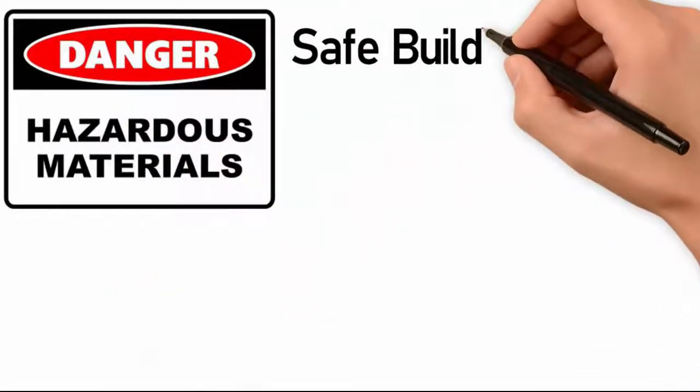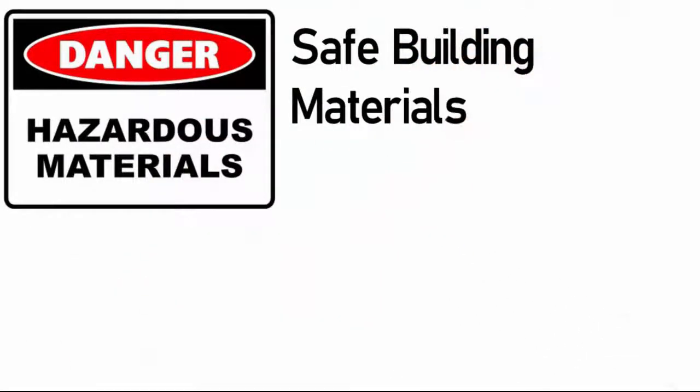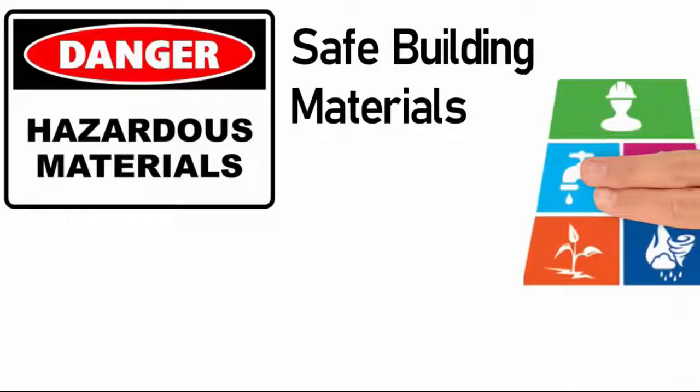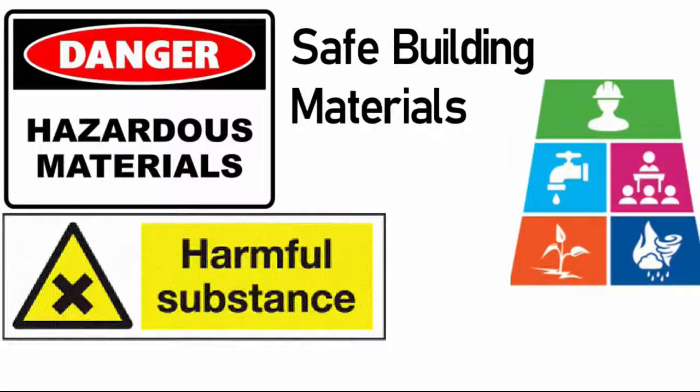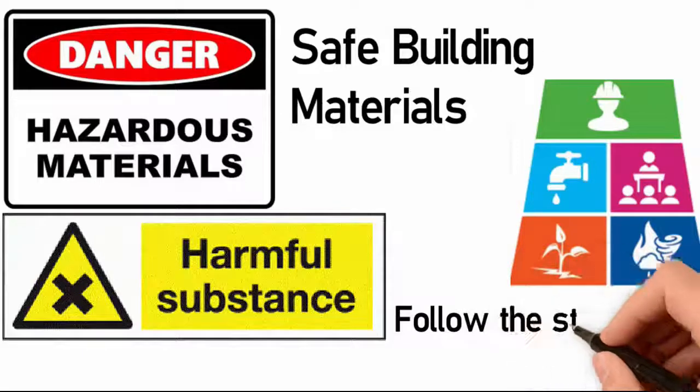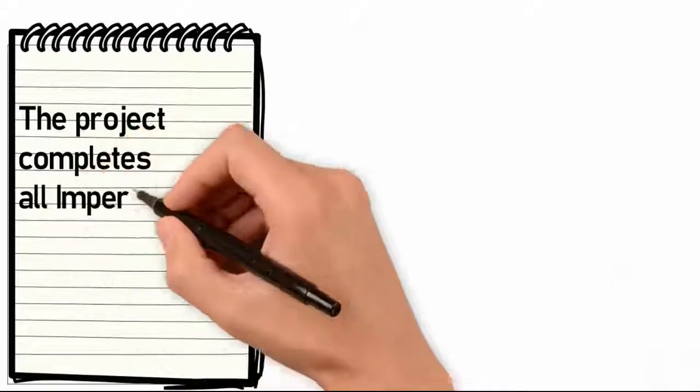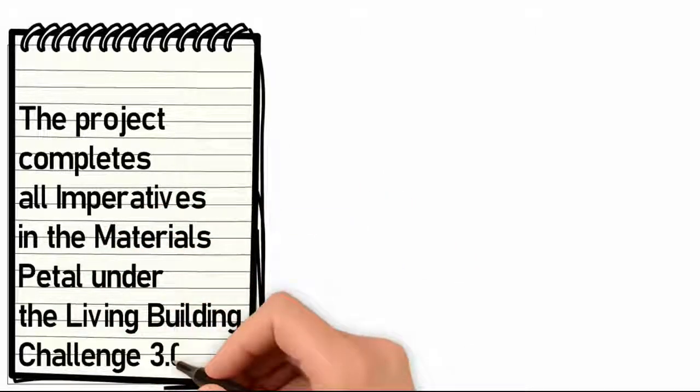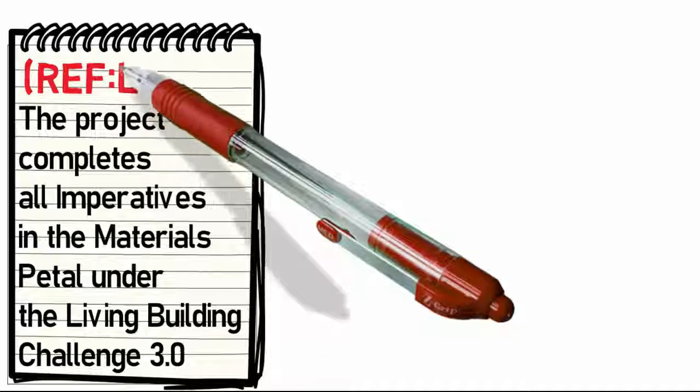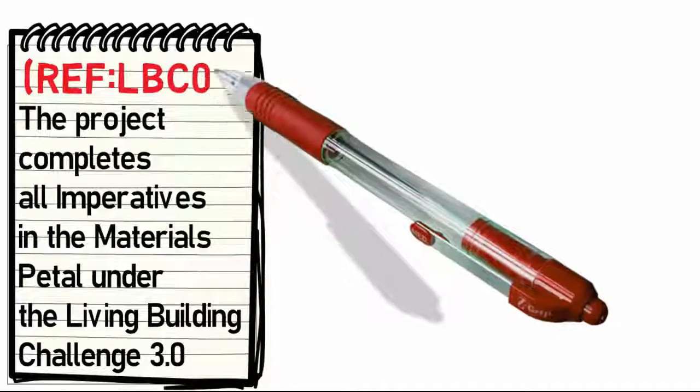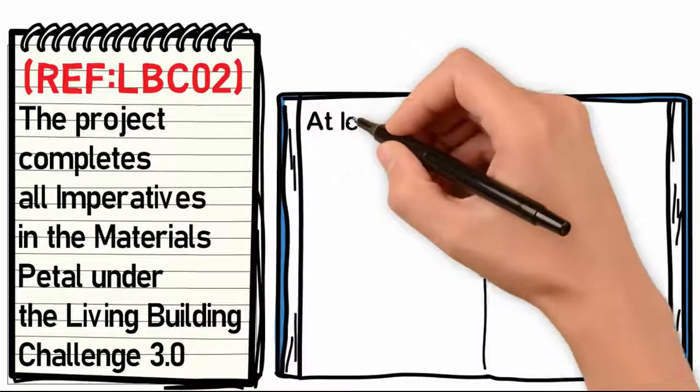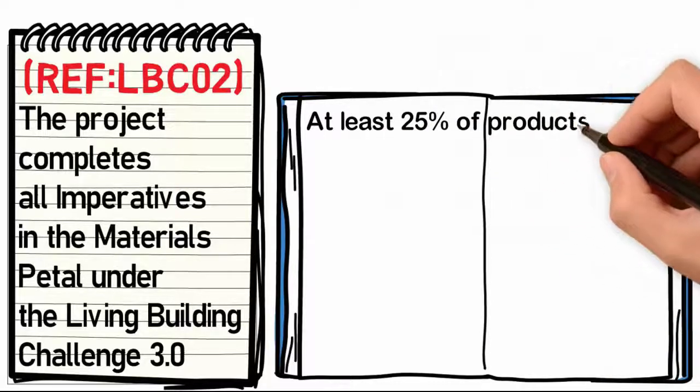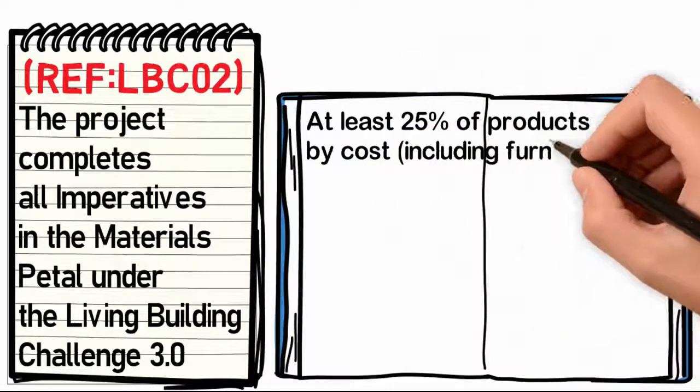Follow programs in the market that allow suppliers who have carefully screened the composition of their products and avoided potentially harmful substances. Follow the standards as appropriate. The project completes all imperatives in the Materials Petal under the Living Building Challenge 3.0 (Reference: LBC02). At least 25% of products by cost, including furnishings and built-in furniture, should meet requirements.